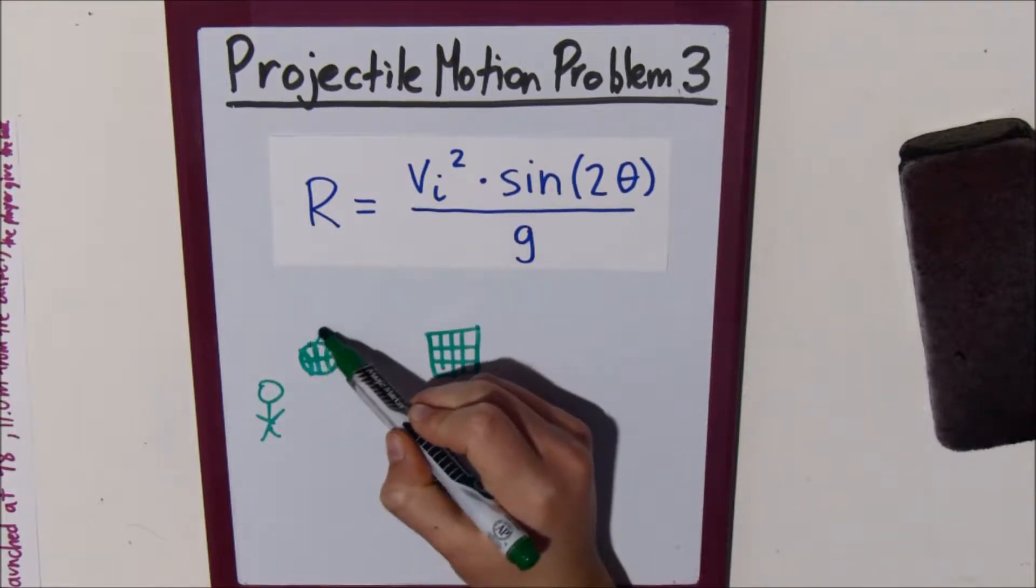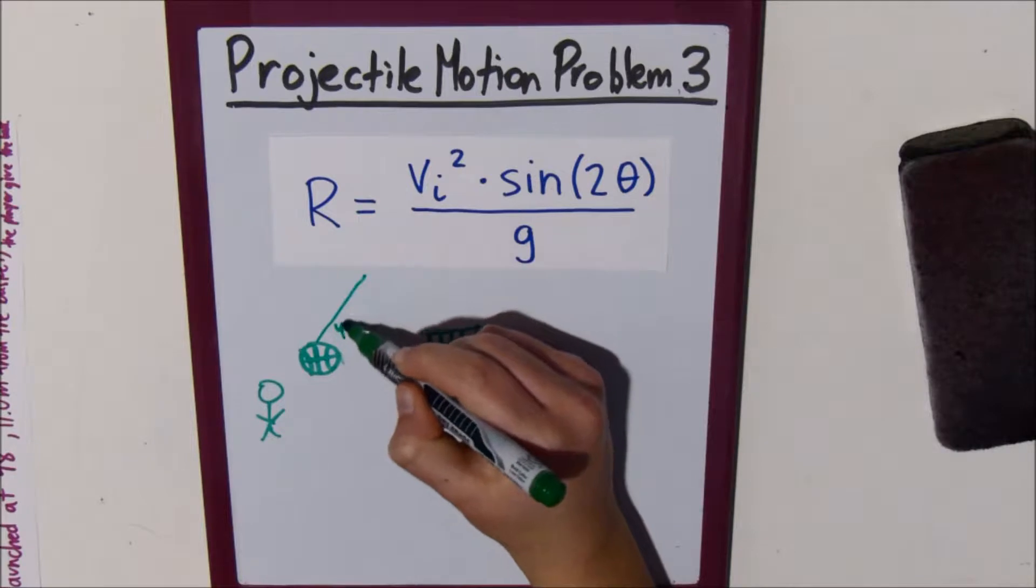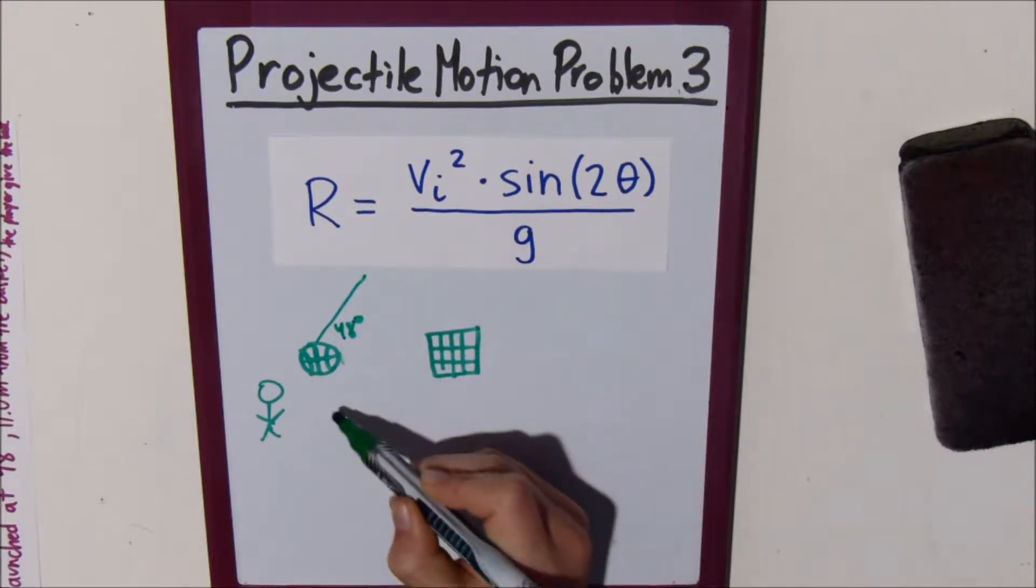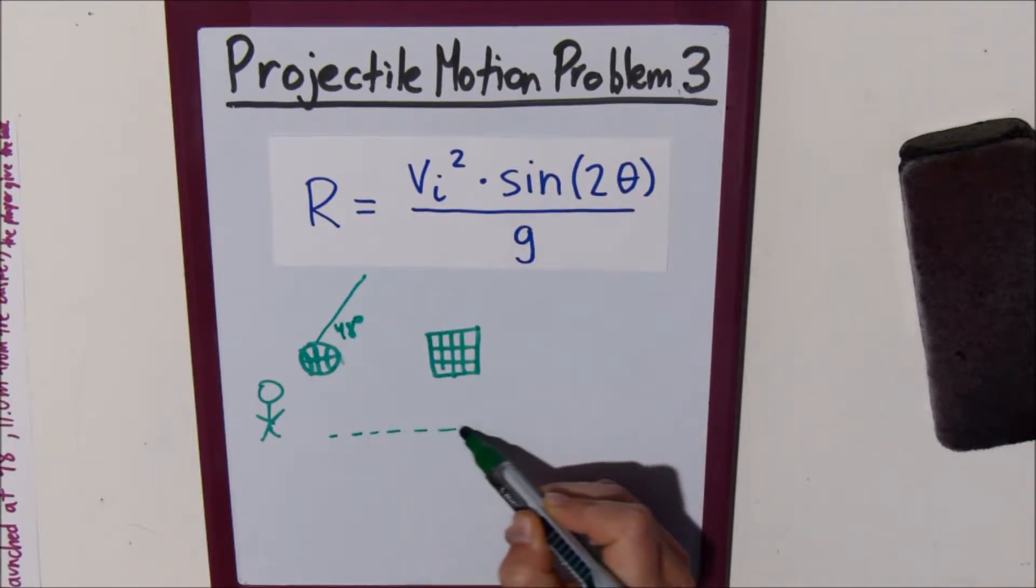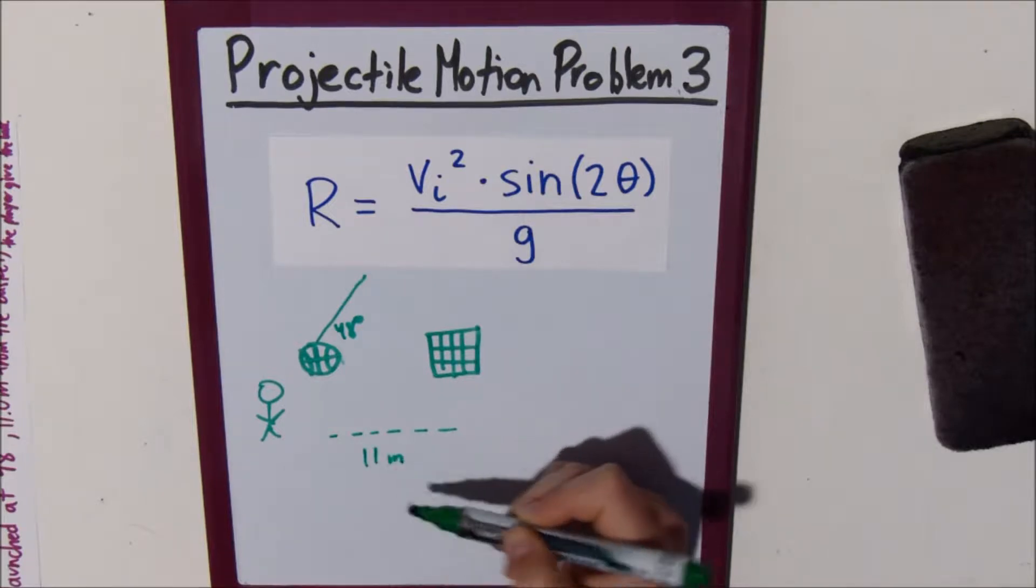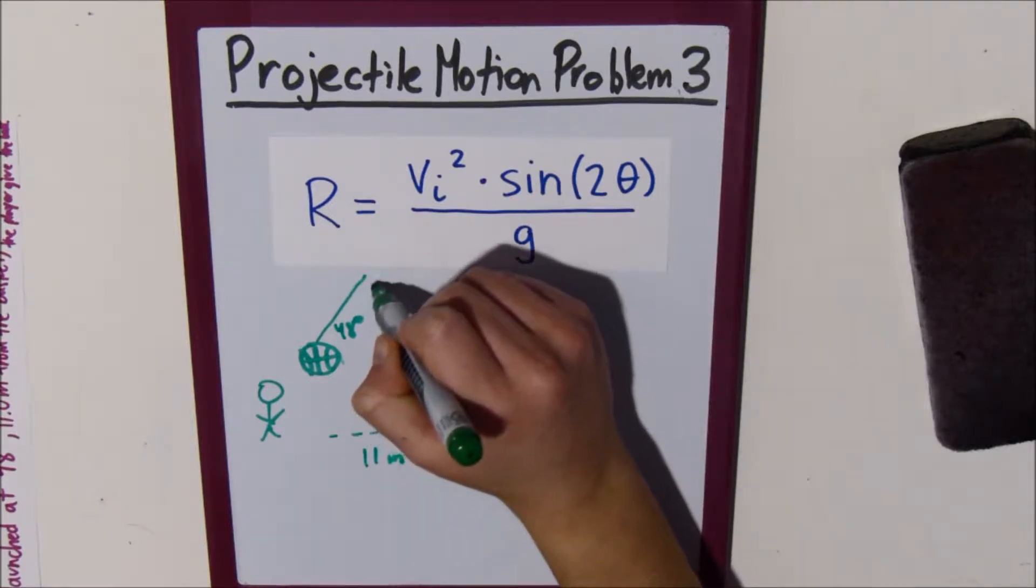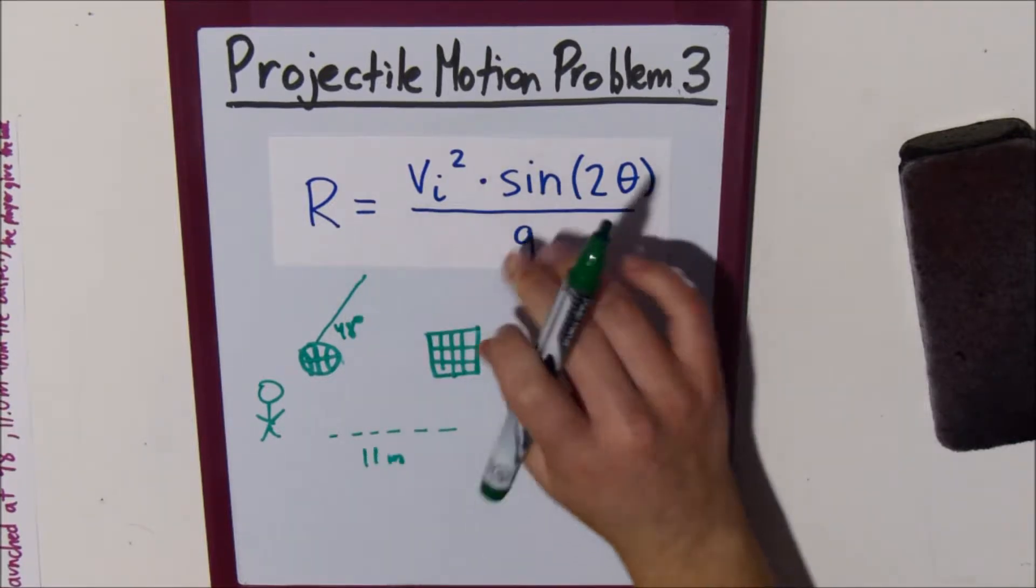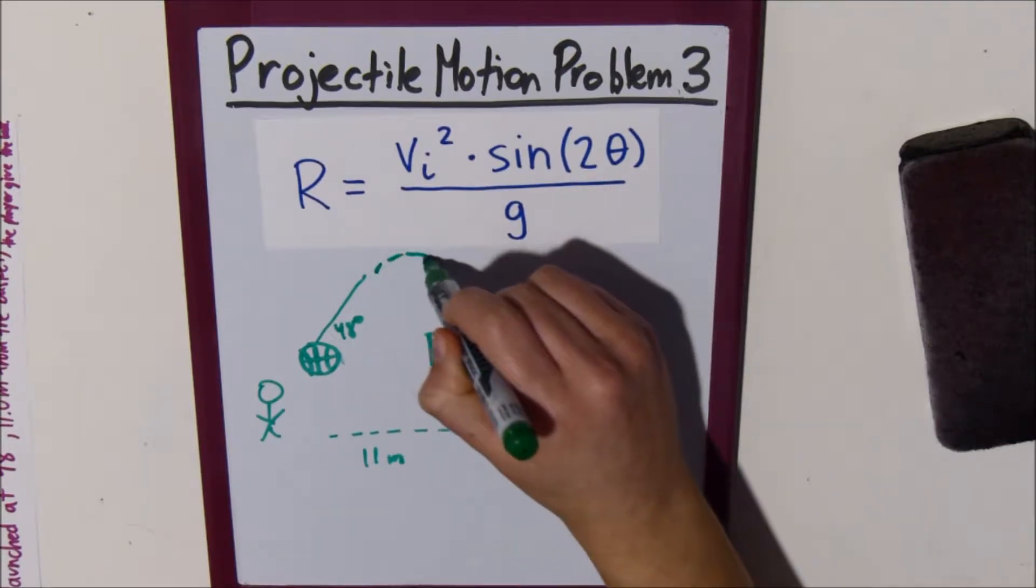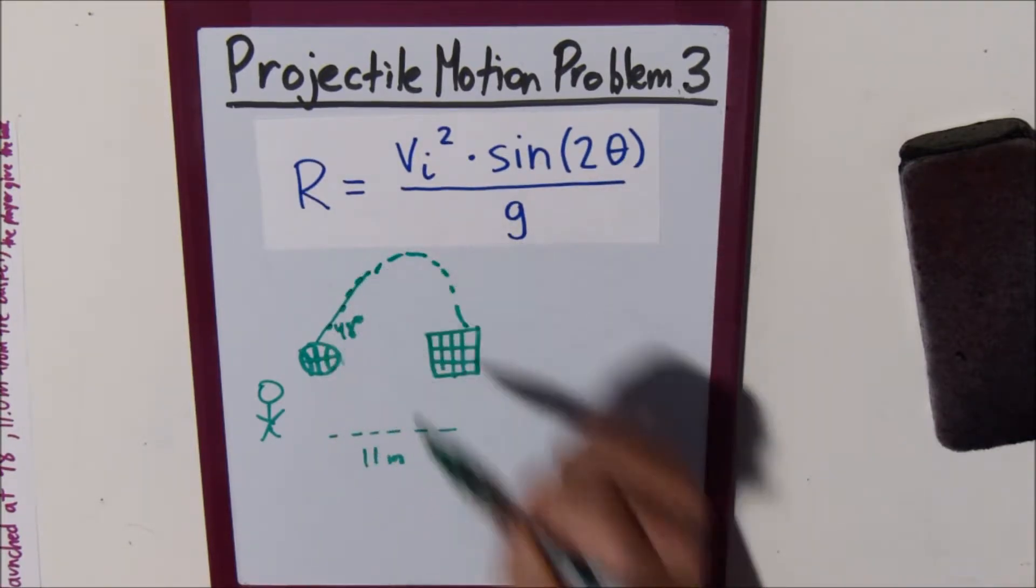So, it's launched at 48 degrees, 11 meters from the basket. So, it's going to follow a path kind of like a parabola, like this.